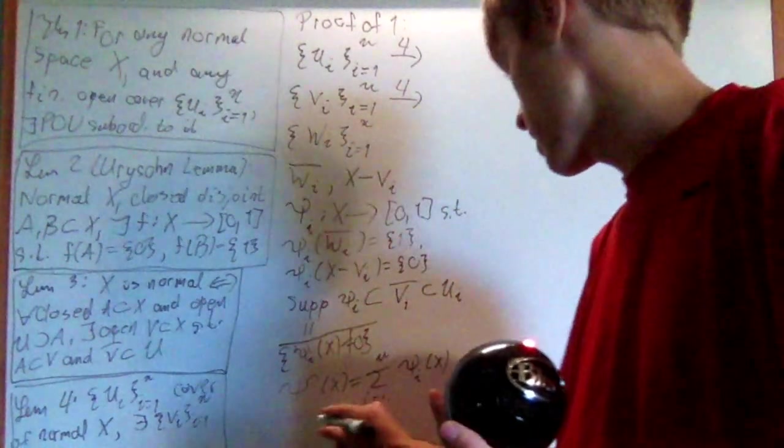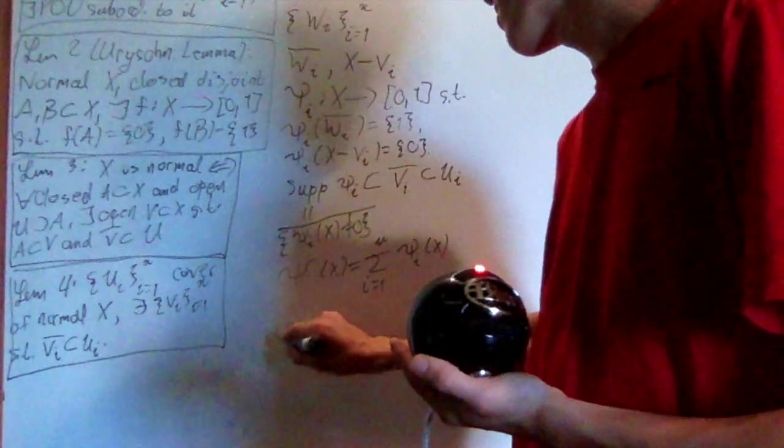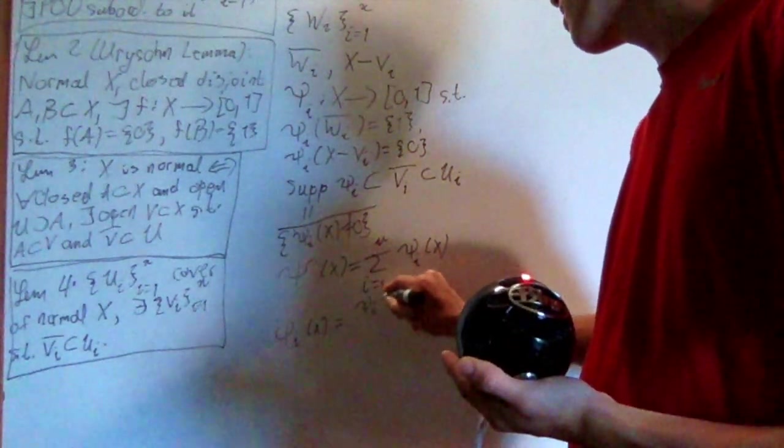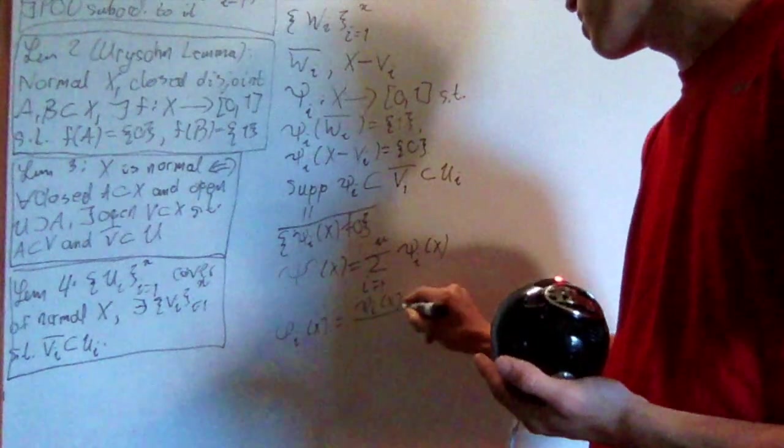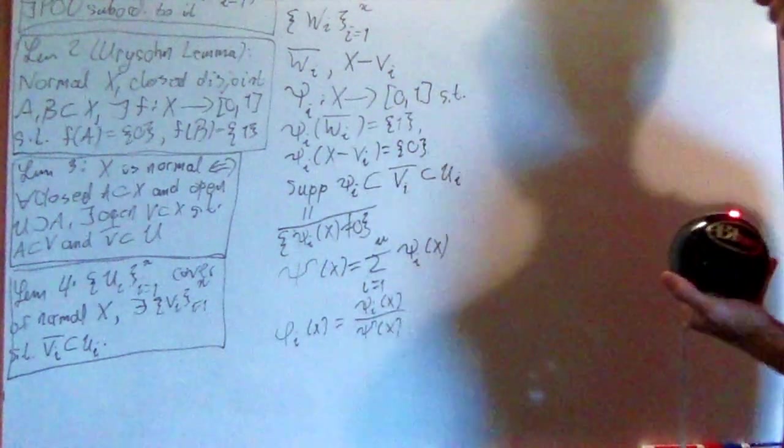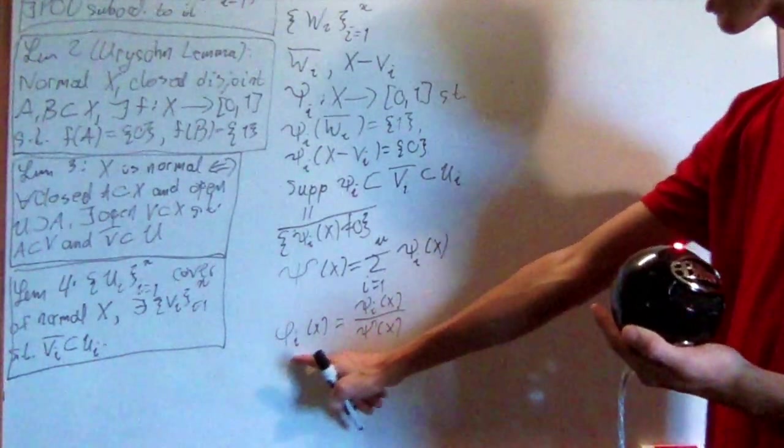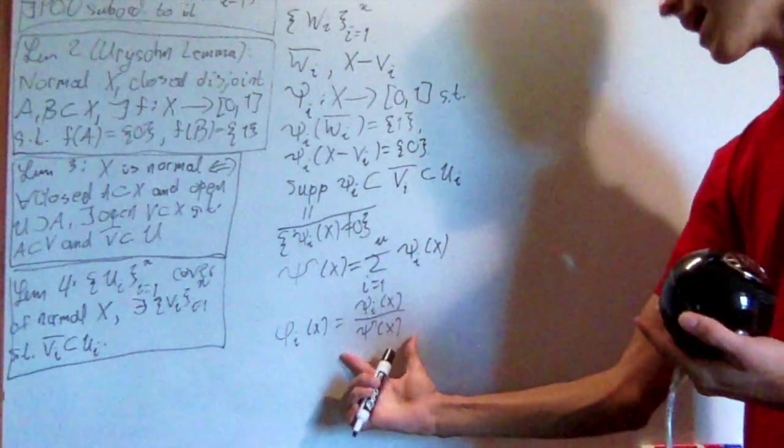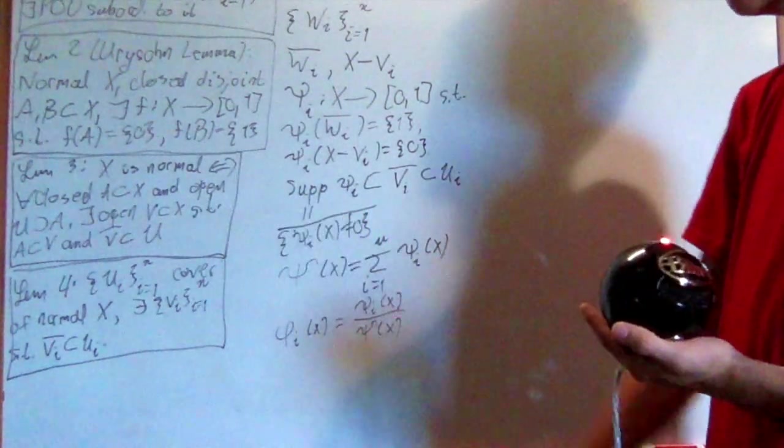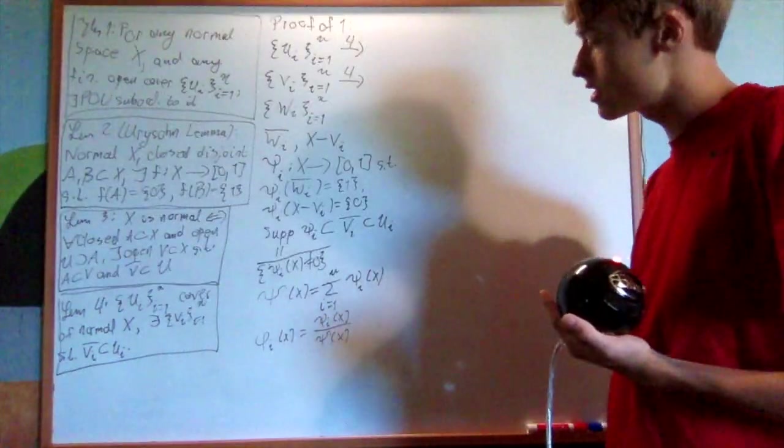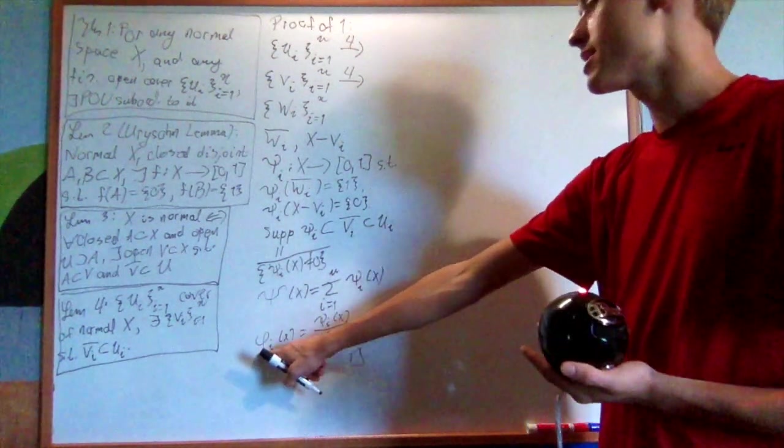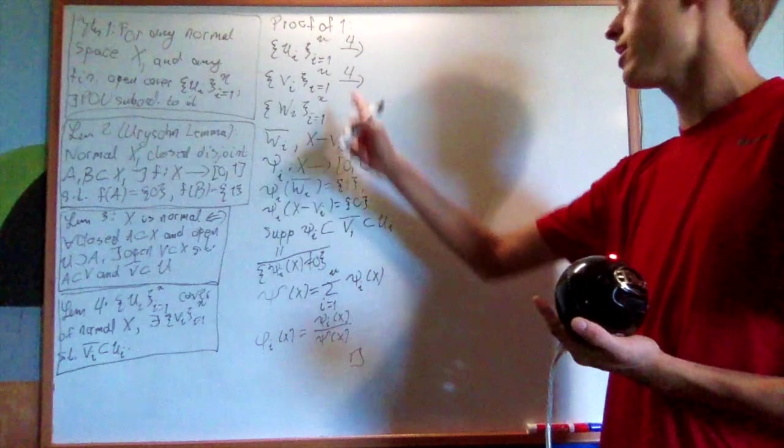And therefore, what I can just go ahead and do is I can define phi i of x to be psi i of x divided by this sum of all of them, capital psi of x. And then we get a partition of unity right here. And due to the fact that this is positive, this is maintained. The support's the same. And that's the trick that we used last time. And that's how you prove it. These phi i's is the partition of unity subordinate to u i.